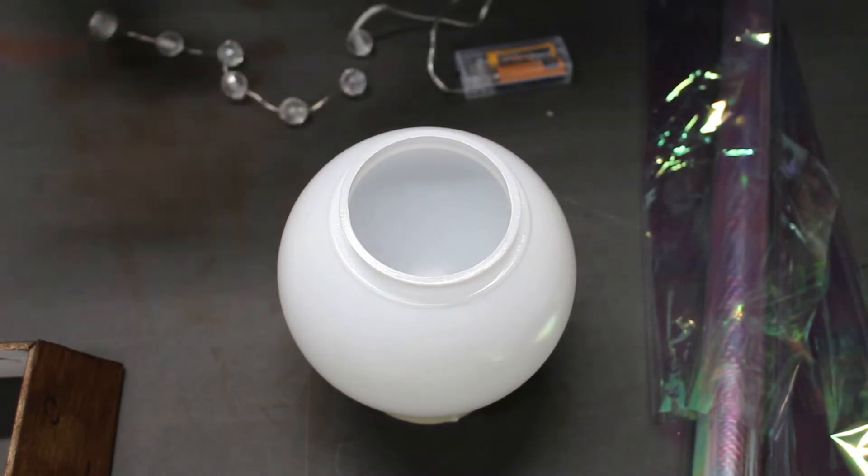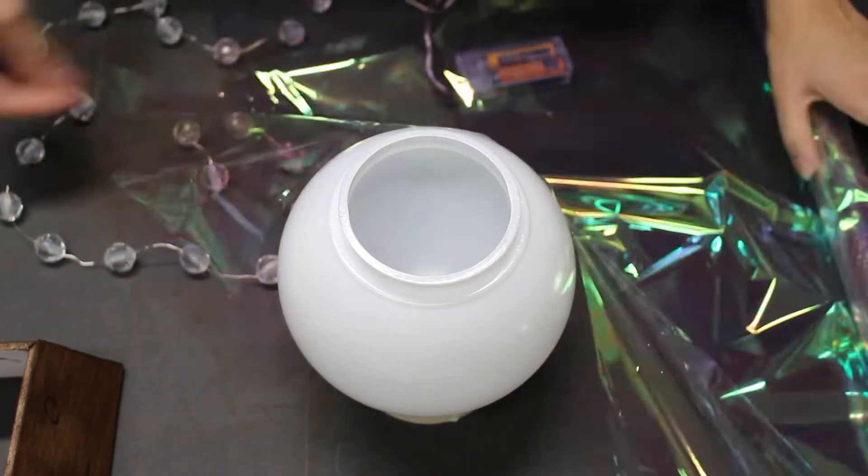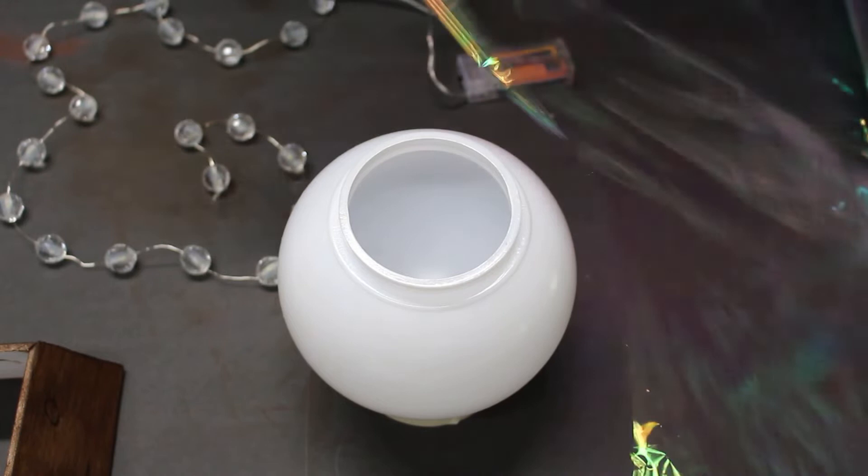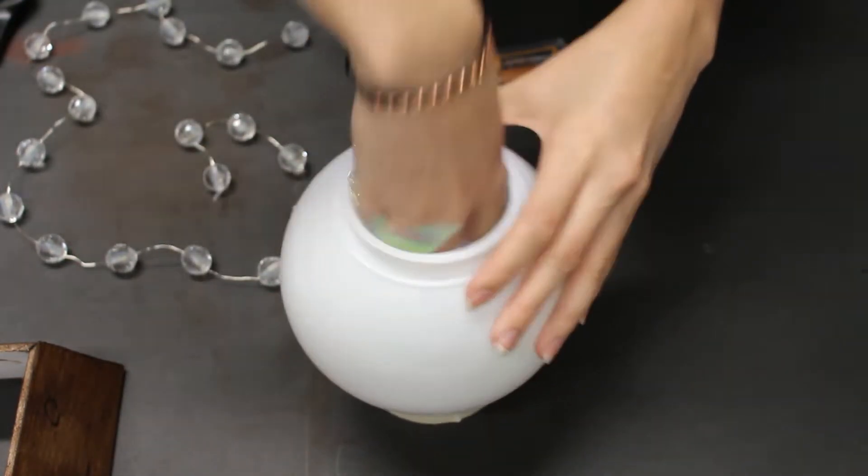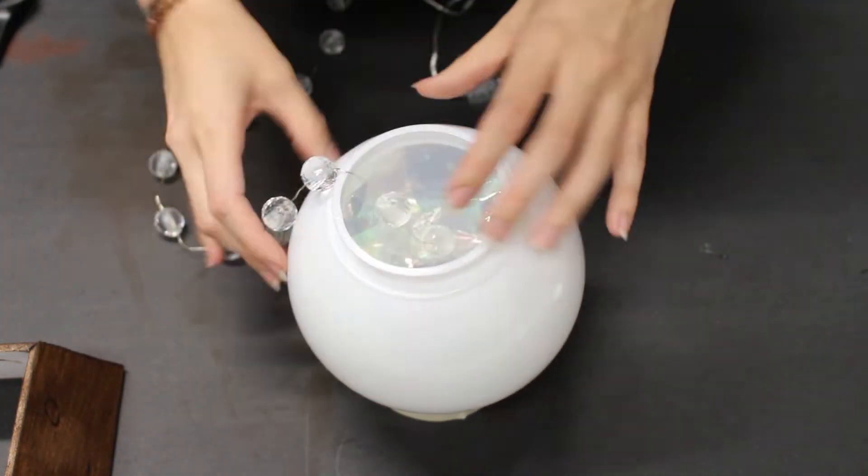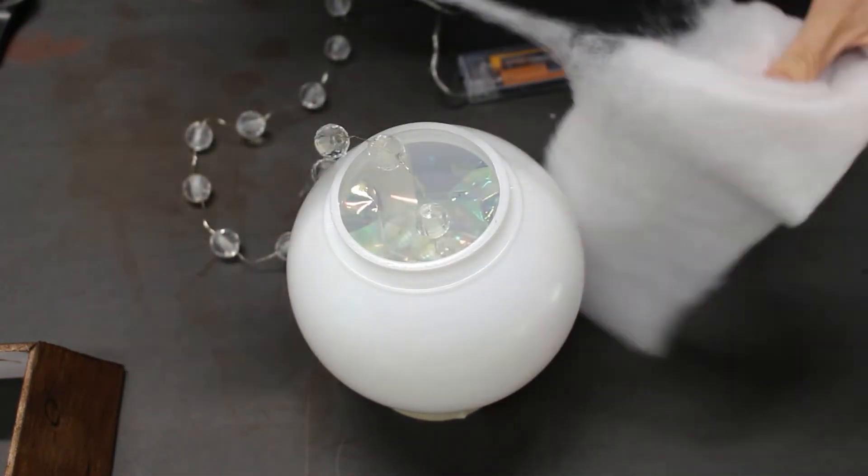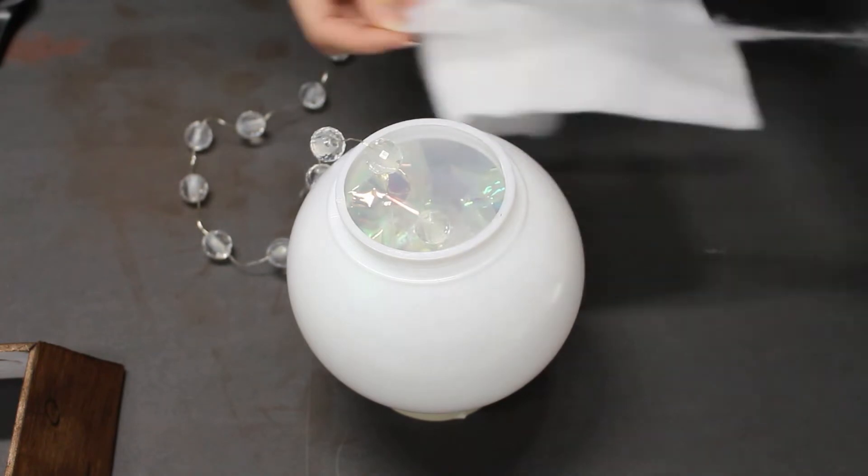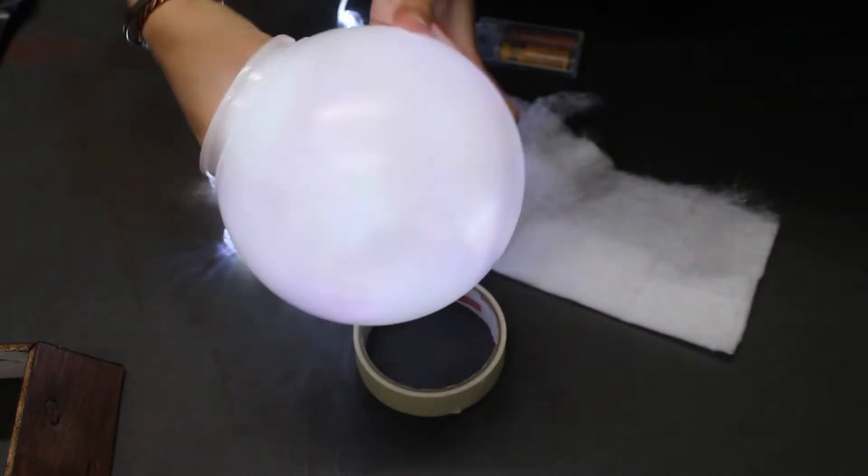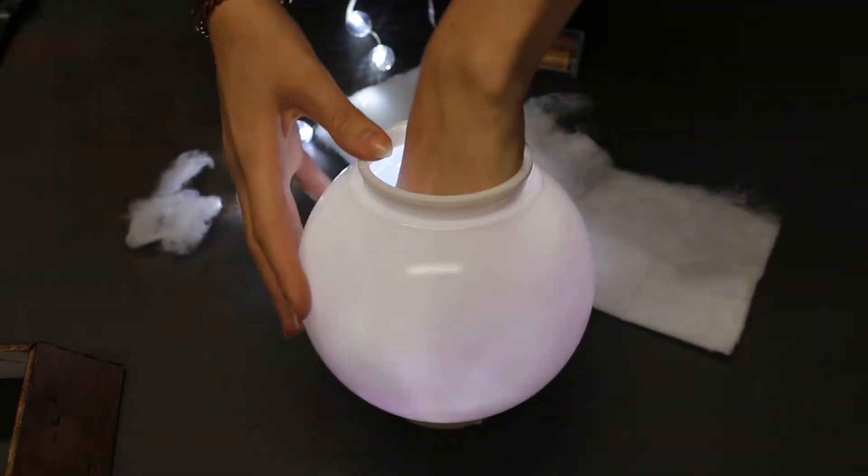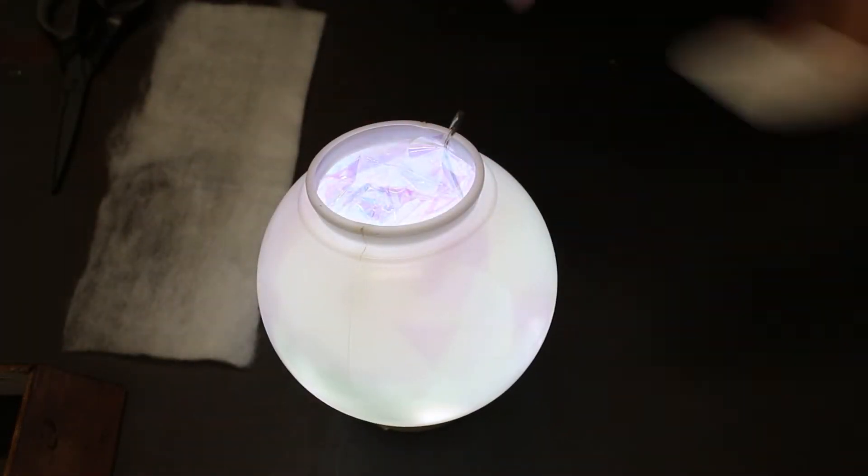While I let that glue set, I'm going to begin creating my crystal ball. I have a battery power string of LED lights, and this really pretty iridescent gift wrapping. I'm going to use pieces of torn up batting to soften the lights as well. Do little light checks while you work. I wasn't exactly happy how it began, so I tried some other combinations.